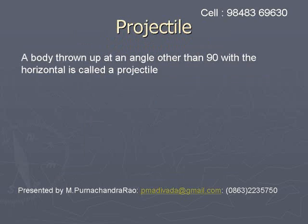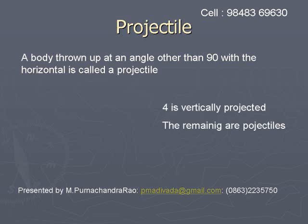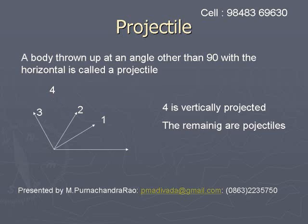Definition of a projectile: A body thrown up at an angle other than 90 degrees with the horizontal is called a projectile. In the figure, four directions are shown. Direction four is vertical projection, so it is generally not considered a projectile. The other three directions — one, two, and three — are considered projectiles, meaning any direction other than 90 degrees qualifies.